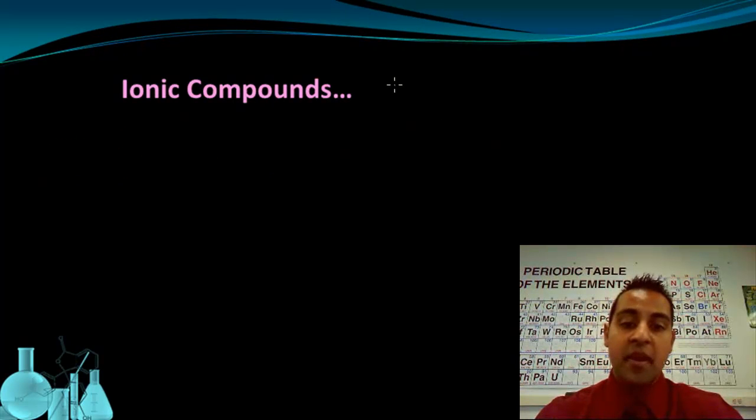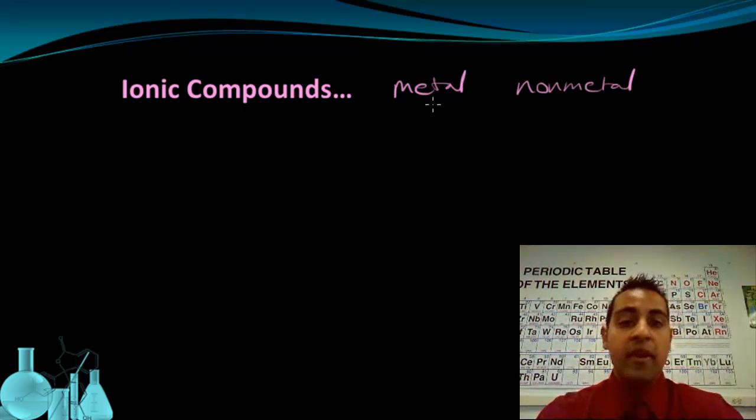First of all, ionic compounds are made up of a metal ion and a nonmetal ion. The metal ion has transferred an electron or given an electron to the nonmetal ion, and so the metal becomes a cation and the nonmetal becomes an anion.